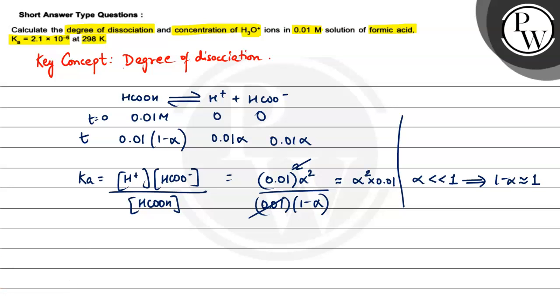So alpha squared into 0.01 is going to be equal to Ka. So alpha squared is equal to Ka, we have 2.1 into 10 to the power minus 6 divided by 0.01.